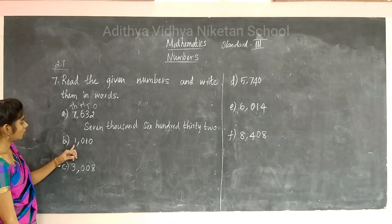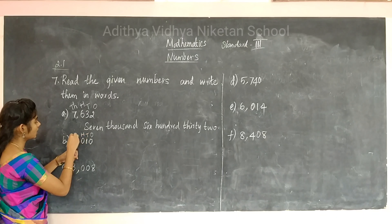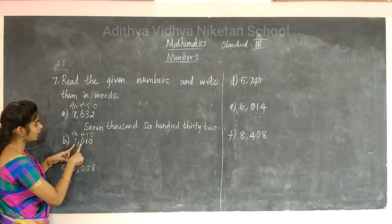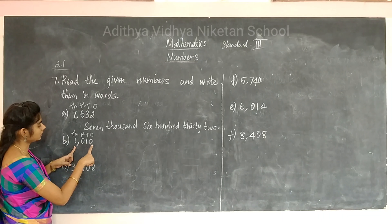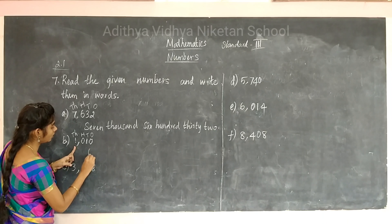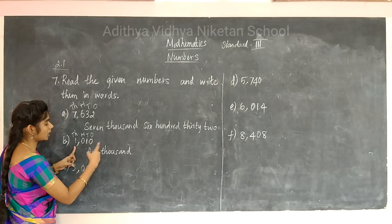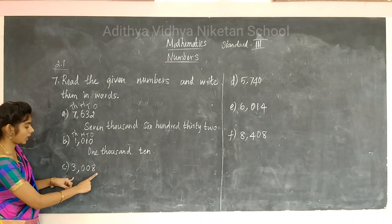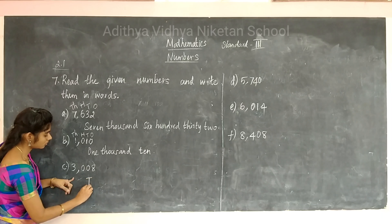The next number: assign place values — ones, tens, hundreds, thousands. This number has 1,000 and a value in the tens place only — no hundreds. So you write one thousand and ten. The next number is 3,000 with no hundreds or tens, so you write three thousand.